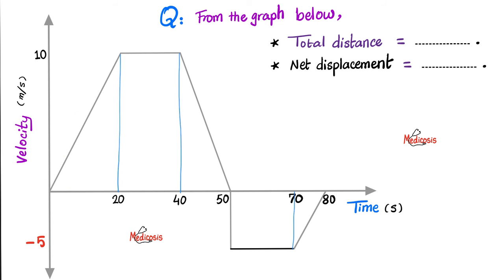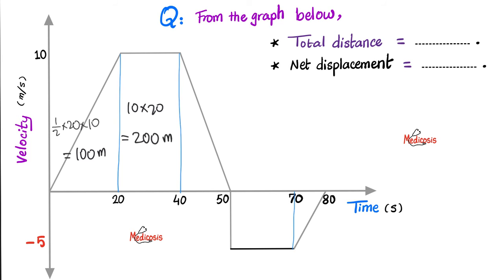How about the area here? Half the base times height. The base is 20 and the height is 10, so it is half times 20 times 10, which is 100 meters. How about the surface area here? This is length times width: 10 times 20 is 200 meters. And how about this triangle? Half the base — half of 10 is 5. Multiply that by the height: 5 times 10 is 50 meters.